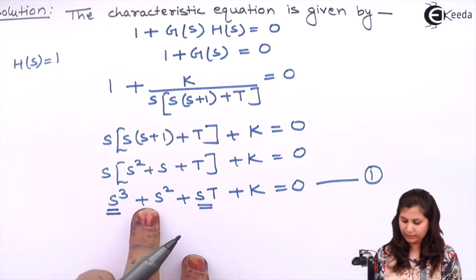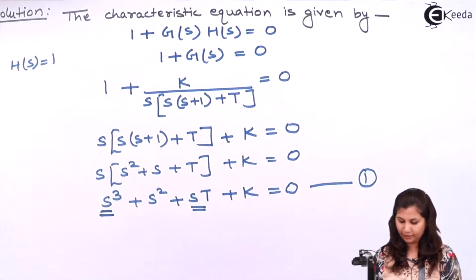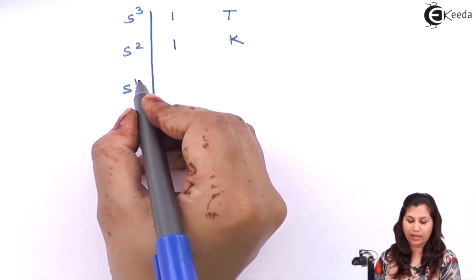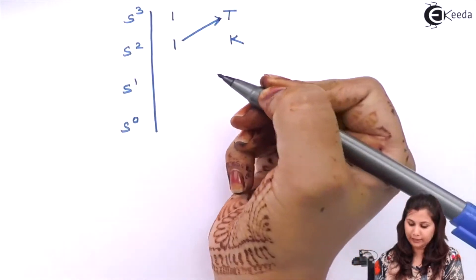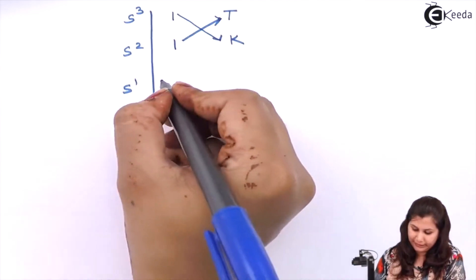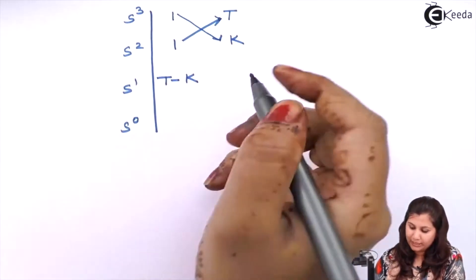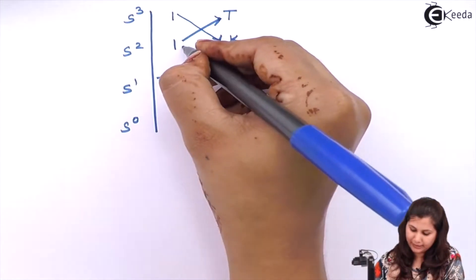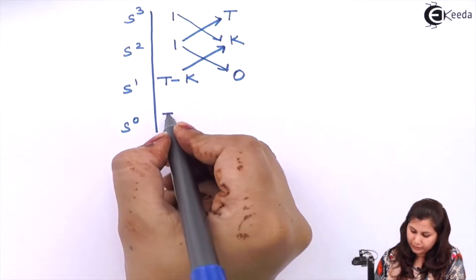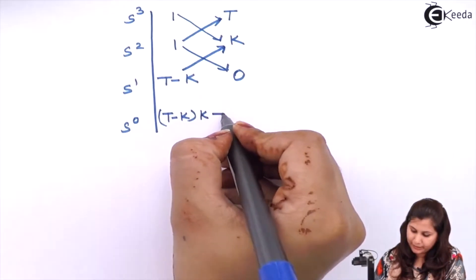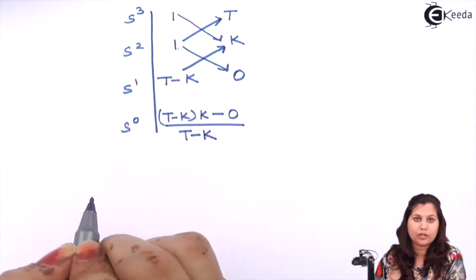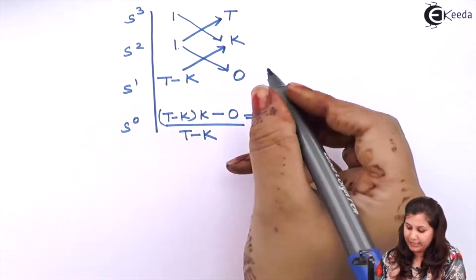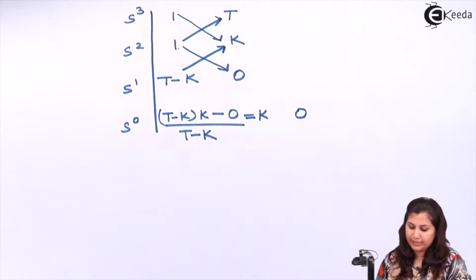The coefficient of S⁰ is K. So we will have 1 and K in the S² row. Now for the S¹ row, we compute: (1×T minus 1×K) divided by 1, which gives T minus K. This will be 0. For S⁰, we compute: (T minus K) times K minus 1 times 0, divided by (T minus K), which equals K. And this will be 0. So this is our Routh array.